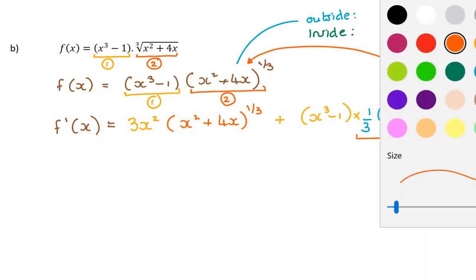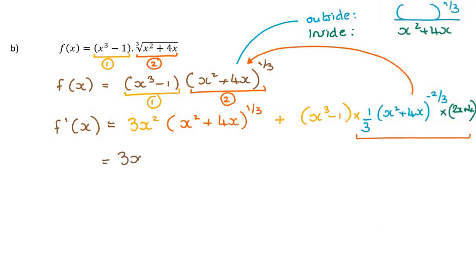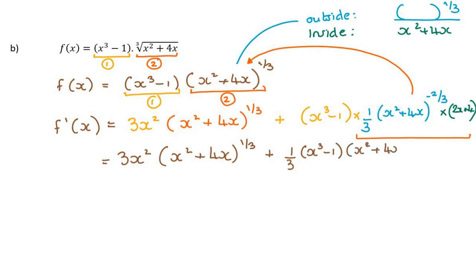That entire long expression is the derivative of the second function using the chain rule. Now, how neat can we make this? The first term can't really get any neater — that's three x squared times x squared plus four x to the power of a third. The second term, bringing the one third to the front, gives one third times x cubed minus one times x squared plus four x to the minus two thirds times two x plus four. It's not much simpler, so you can see why we don't bother simplifying these further.